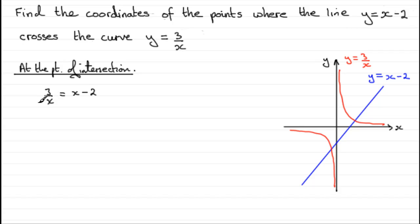Now, first of all, I would want to get rid of that x, so I would want to multiply both sides by x, and that's going to give me 3 equals x squared minus 2x. We've got a quadratic equation here because of the x squared, so I need to rearrange it. I'm going to subtract 3 from both sides, so that's going to give me x squared minus 2x minus 3 equals 0.